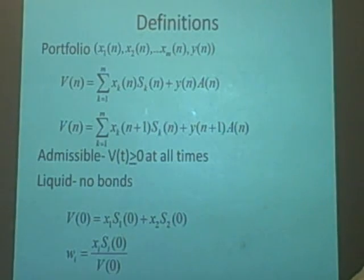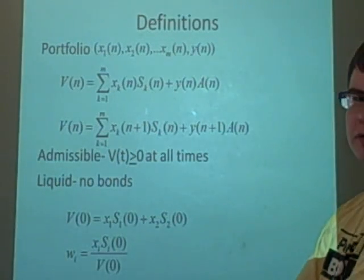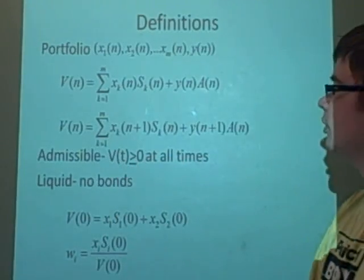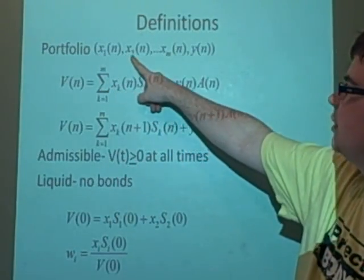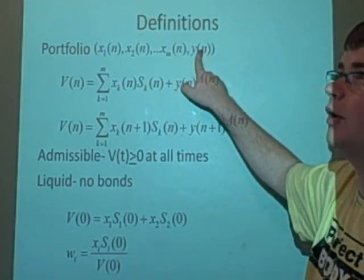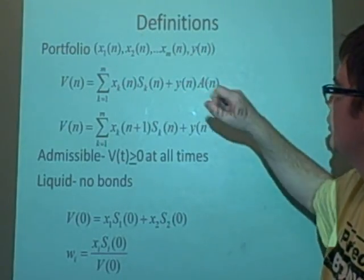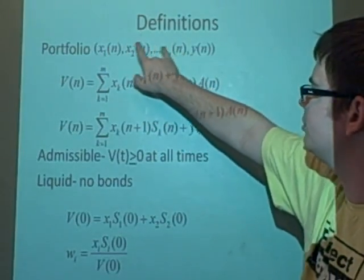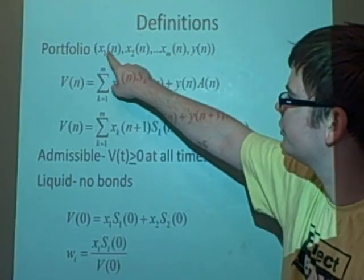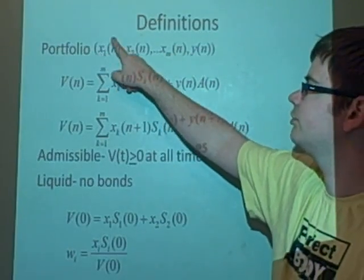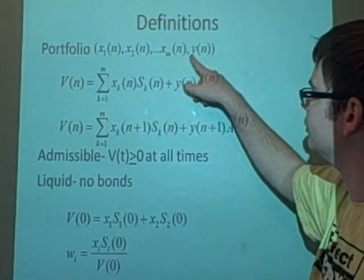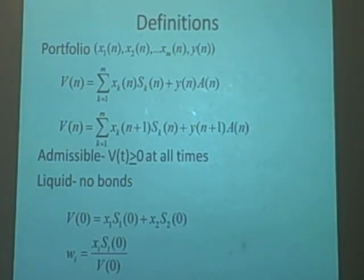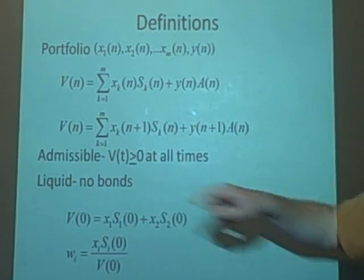First, we want to define a portfolio as giving you a set of what you own. So it's just giving us these different values, x1(n) all the way up to y(n), which are telling us how many shares of each stock we own. So the x1 value will be you own 32 of the first stock and so on. This y(n) at the end is how many bonds you own. And if you own zero bonds, then this is what's known as being liquid.